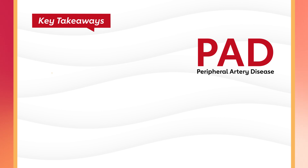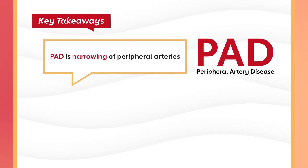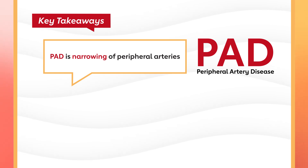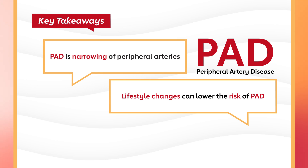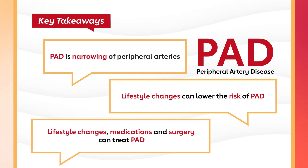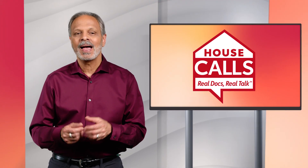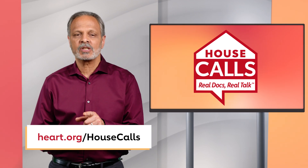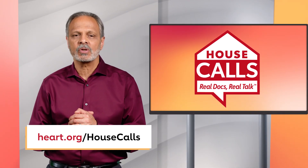Let's recap some key takeaways. Peripheral artery disease or PAD is a narrowing of the peripheral arteries that carry blood away from the heart to other parts of the body like the arms and legs. You can decrease your risk for PAD by quitting smoking, getting regular physical activity, and eating a healthy diet. These, along with medicines and surgery, can also be used to treat PAD. If you're having trouble with your feet or legs, ask your doctor about PAD. If you have questions about health conditions, comment below, hit subscribe, and join me here next time for Answers You Can Trust.